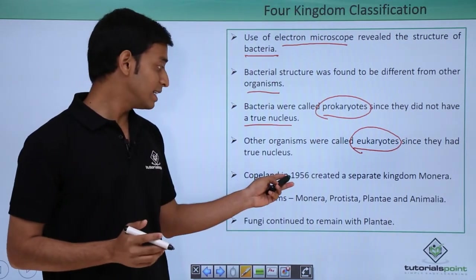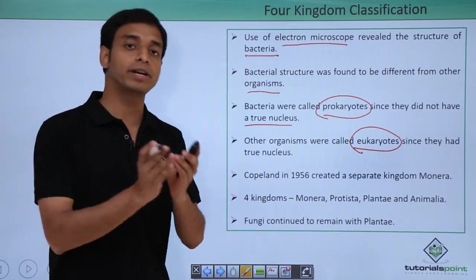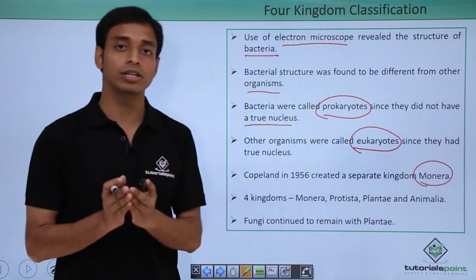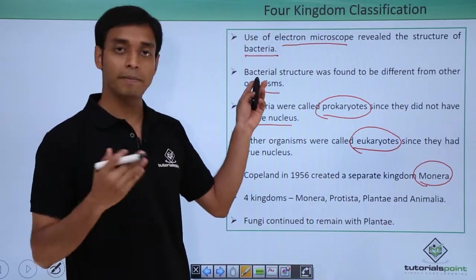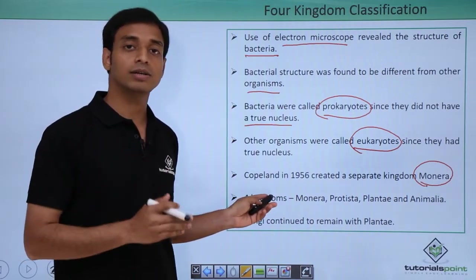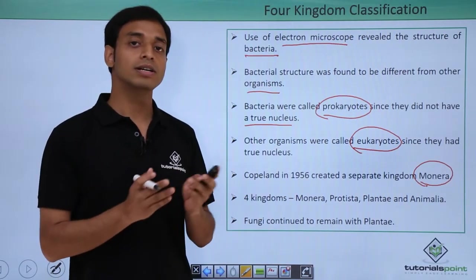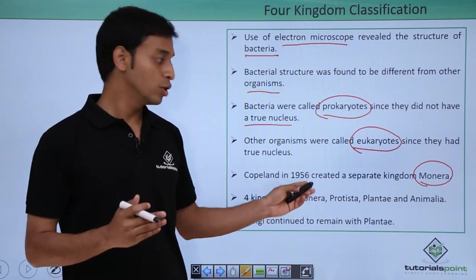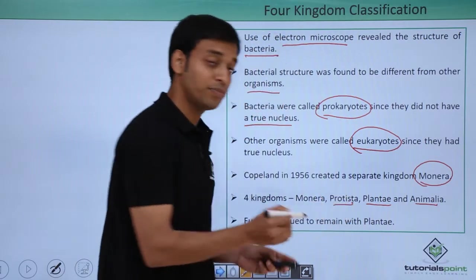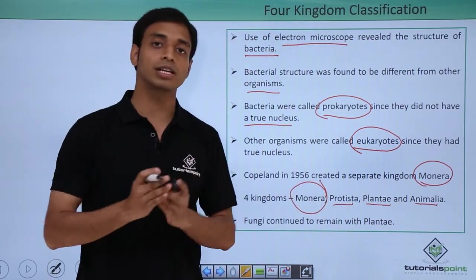In the year 1956, a scientist named Copeland created a separate kingdom known as Kingdom Monera, and this kingdom consisted of these bacterial cells. Based on this, we have a four kingdom classification system. We already had Plantae, Animalia, and Protista, and now we also have Kingdom Monera — giving us four kingdoms in total.